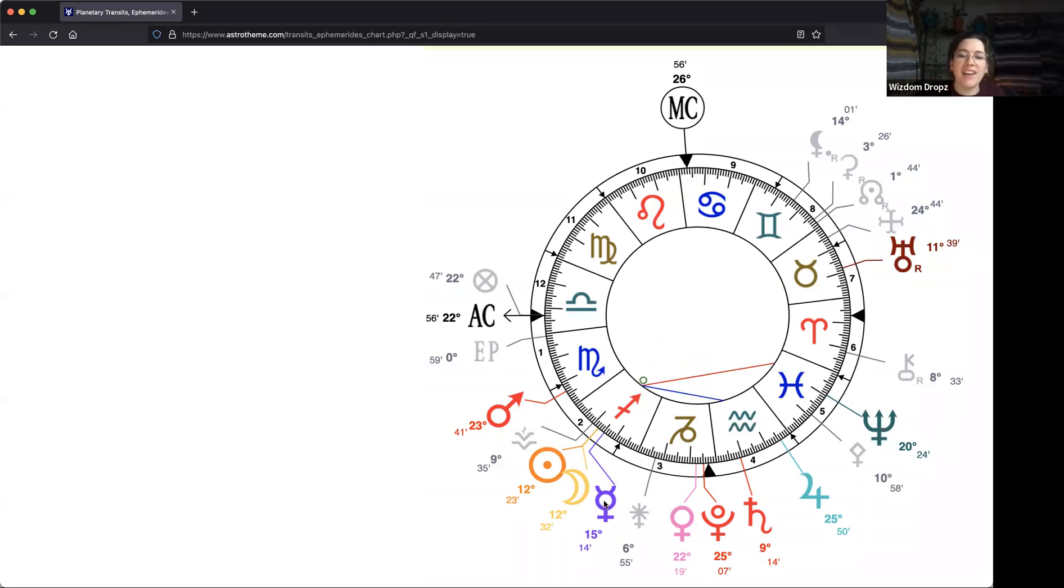This Mercury here is conjunct the new moon and sun, and in addition to being square with Neptune, it is also in a sextile conversation with Saturn at nine degrees of Aquarius.